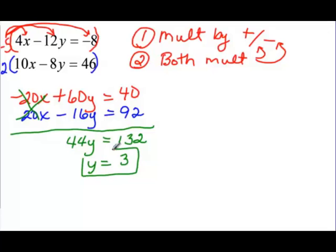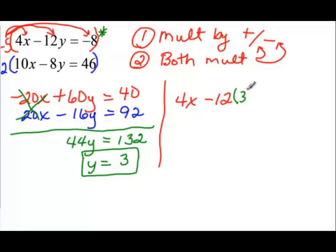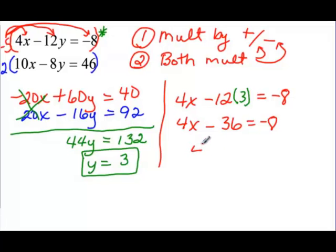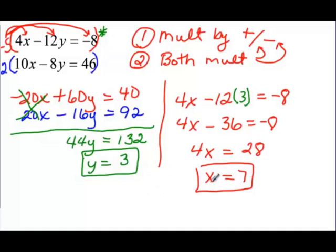Remember, we know y but we still need to find x. So we plug it into the top or bottom equation — it doesn't matter. Again, I'm going to try the top equation because the numbers are smaller. So I come in and say 4 times x, then minus 12 times y, which I know is 3, equals negative 8. So 4x, and negative 12 times 3 would be negative 36, is equal to negative 8. Adding 36 to both sides, I get 4x equals positive 28. Dividing by 4, x is going to be equal to 7. So x equals 7, y equals 3 is the solution that satisfies this system.